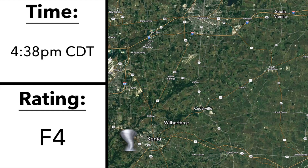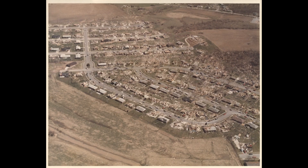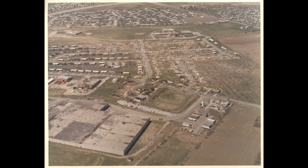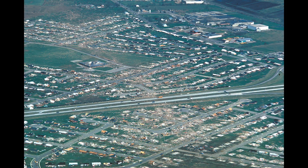As the very violent tornado entered the western part of Xenia, winds were in the F5 range, leveling the Windsor Park and Arrowhead subdivisions. Entire rows of brick homes were swept away, and very little, if any, debris was left behind in some areas.